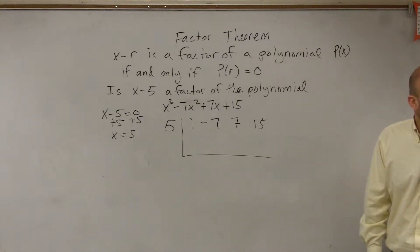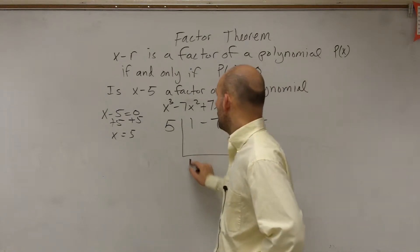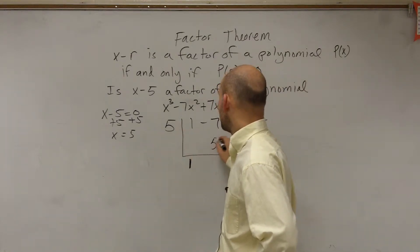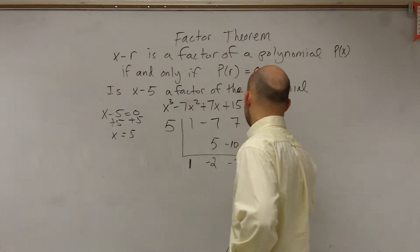So we want to see if this is going to be a factor or not. So what we do is we bring down the 1. 1 times 5 is 5, negative 2. Negative 2 times 5 is negative 10, which is negative 3, negative 15, and 0.